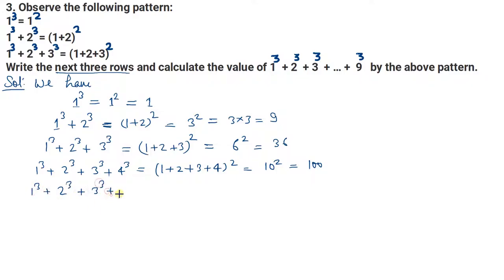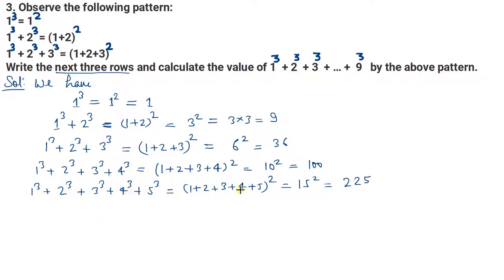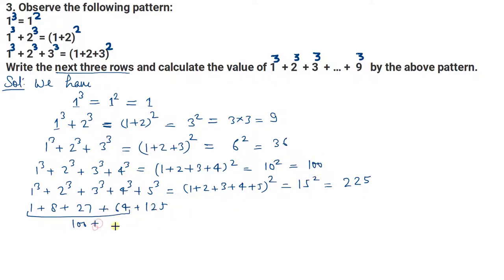Next row: 1 cube plus 2 cube plus 3 cube plus 4 cube plus 5 cube — यहाँ 1+2+3+4+5 = 15, और 15 का square होता है 225. Cube side: 1+8+27+64+125 = 225. Exactly match — pattern follow हो रहा है।